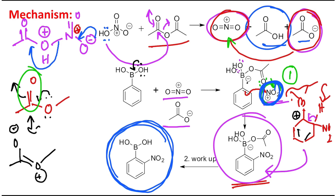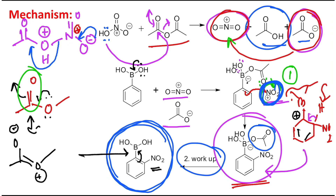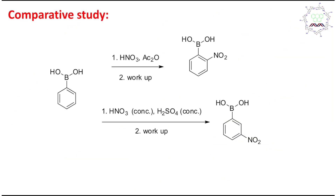After workup, the acetate is removed and we get the ortho-nitro boronic acid derivative. You may ask whether the carbon-boron bond is stable enough under these conditions. It's true that boron-carbon bonds have some stability issues, but here it is an aromatic carbon-boron bond with multiple bond character — the double bond can donate electron density to boron, giving the benzene nucleus partial positive charge. This multiple bond character due to aromaticity makes the bond significantly stronger and more stable. The reaction is also quite mild — nitric acid and acetic anhydride, no heating required.